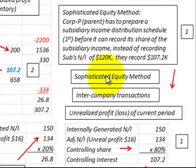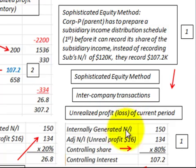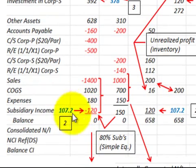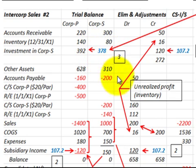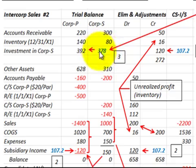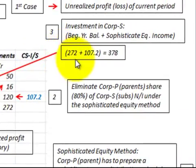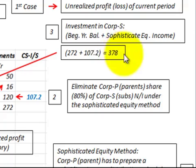Using the sophisticated equity method, we first calculate the income distribution the parent receives from the subsidiary's income distribution schedule, and that is what gets recorded as subsidiary income. Because we recorded subsidiary income using the sophisticated equity amount, it affects other adjustments for intercompany transactions. For the first year, the investment in the subsidiary by the parent is updated by adding the sophisticated equity income to the beginning balance to get the new investment balance.